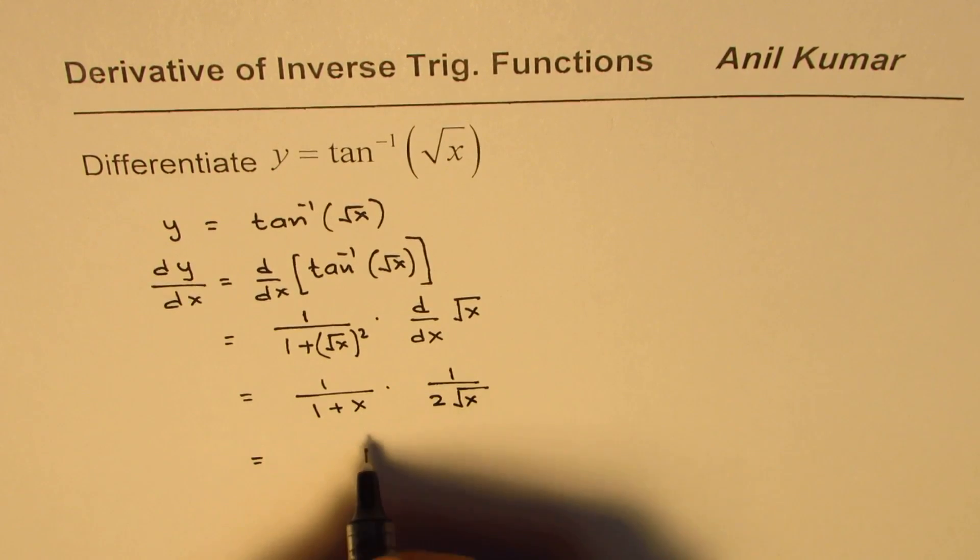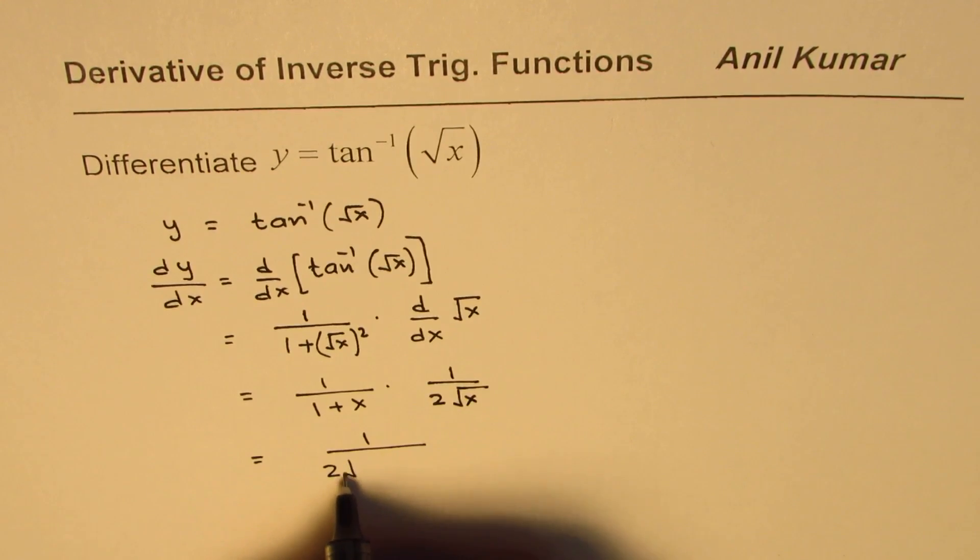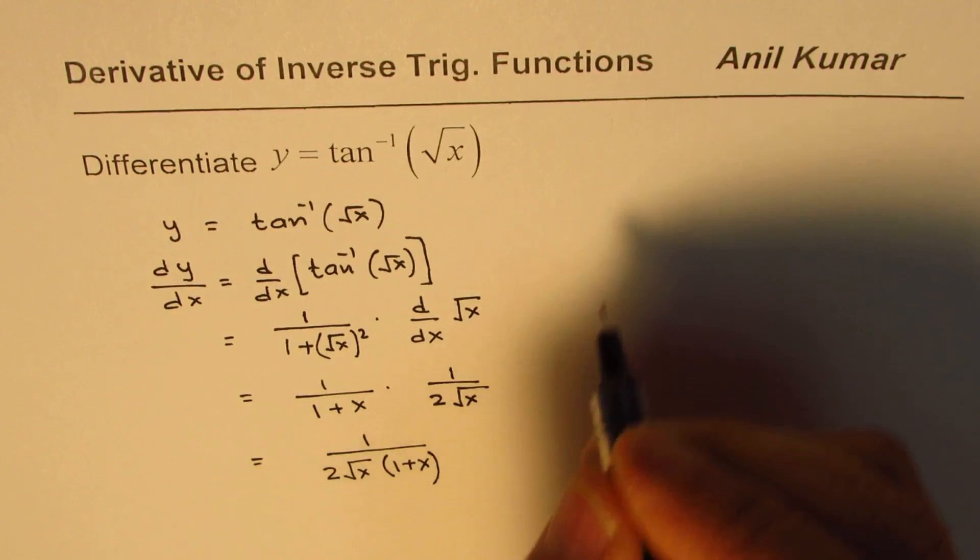So the derivative of this function is 1 over 2 square root of x times 1 plus x.